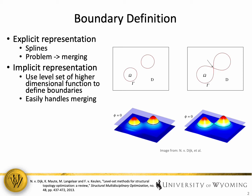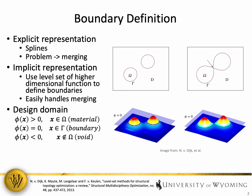For example, if the boundaries are defined in two dimensions, then a three-dimensional level set function will be required as illustrated in the figures on the right. The technique works by slicing through the level set function using the zero level set. As the zero level set is shifted along the level set function, multiple features can be easily merged together. Using this technique, the design domain can be defined such that if the level set function is greater than zero, then the region will be assigned material. If it is equal to zero, it defines the boundary, and if it is less than zero, it defines a void domain.